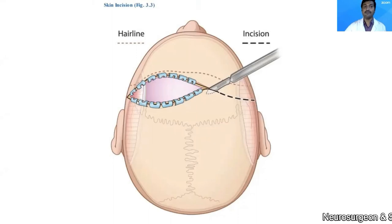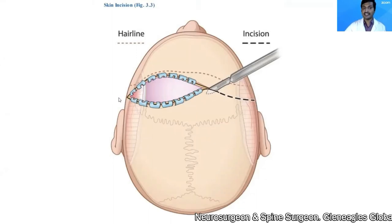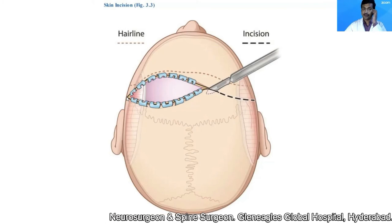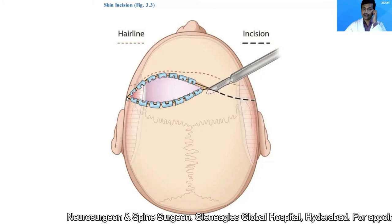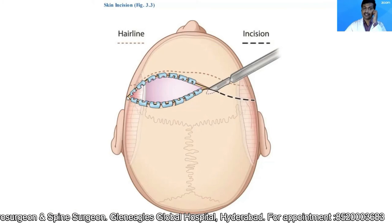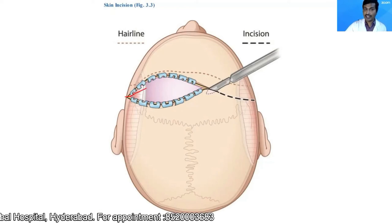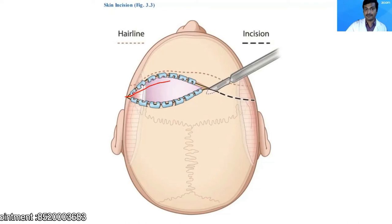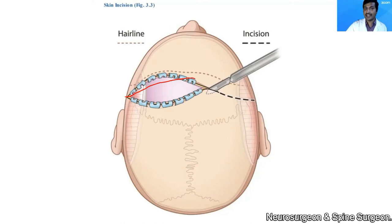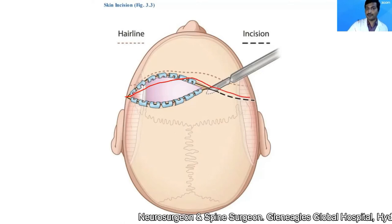We take a bicoronal skin incision. The skin incision starts from the zygomatic arch on one side, at least one centimeter in front of the tragus, then goes along just behind the hairline, reaches the midline, and then mirrors back to the opposite side.